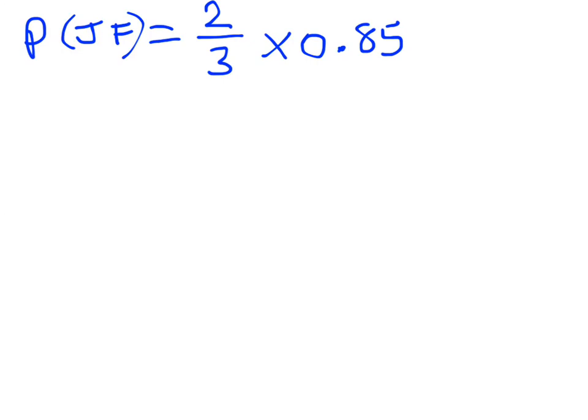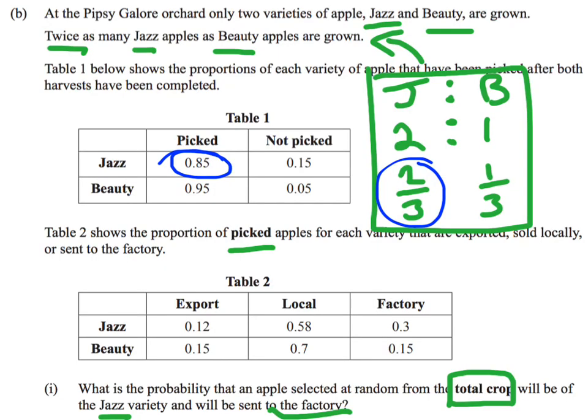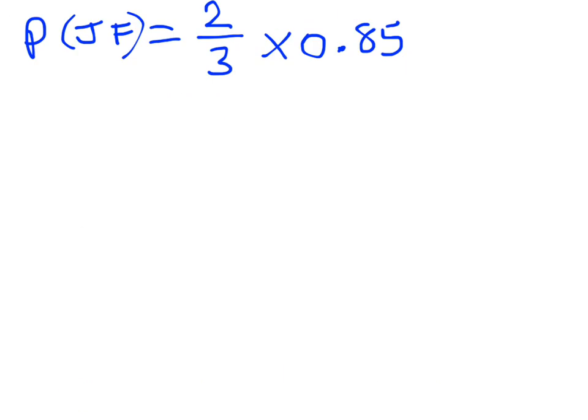Two thirds of all apples are jazz from the trees. 85% of the apples on the trees get picked. And then I'm told for the jazz apples to go to the factory, there are 30% of the jazz apples that go to the factory. So now I'm going to multiply this by 0.3.